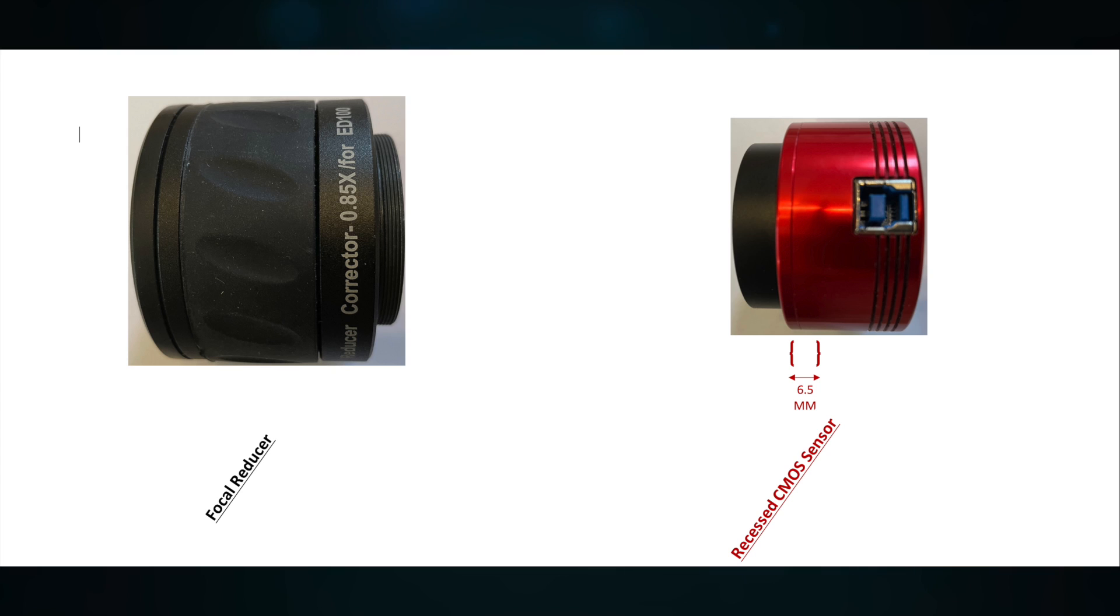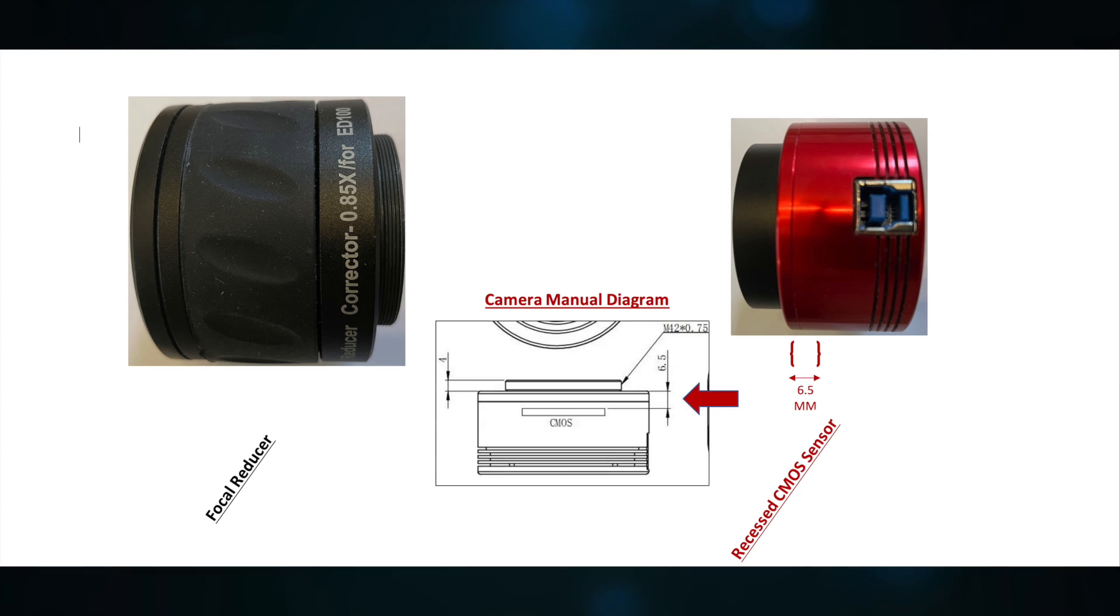And according to the documentation of the ZWO manual, in this camera, it's recessed 6.5 millimeters from the front edge of the red part of the camera. And here you can see that illustrated in the diagram from the manual with that 6.5 millimeter measurement to the sensor from the front edge of the camera.